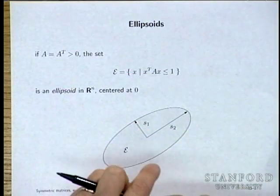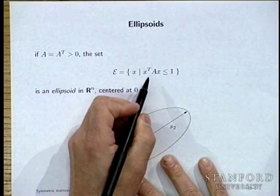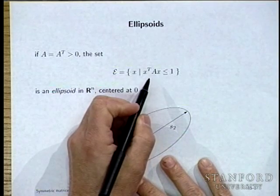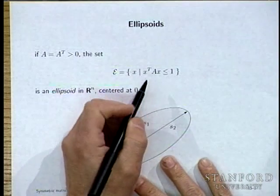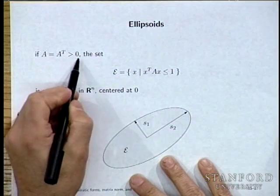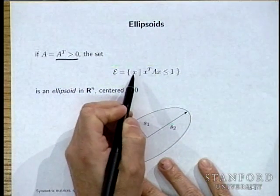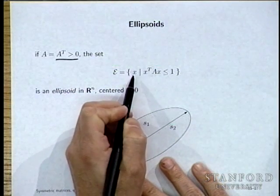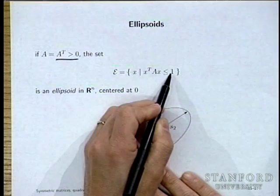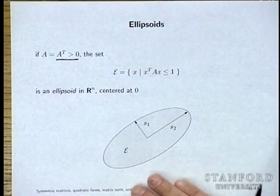An ellipsoid is a sub-level set of a positive definite quadratic form — the set of x such that X transpose AX is less than 1. A special case is A equals I, giving the unit ball.